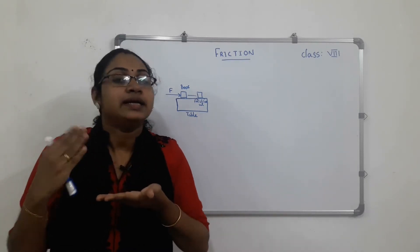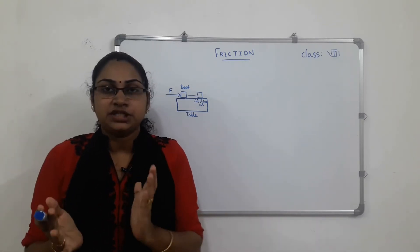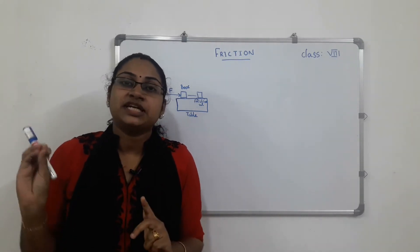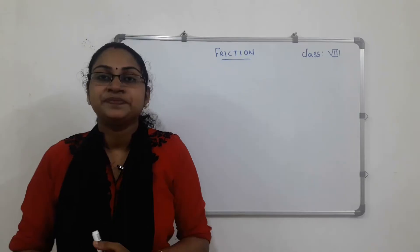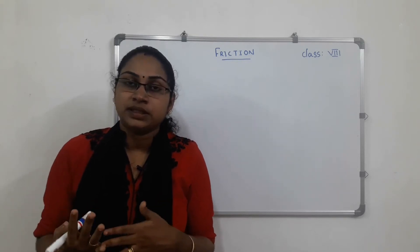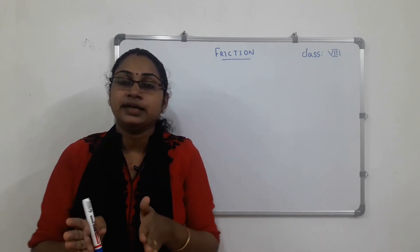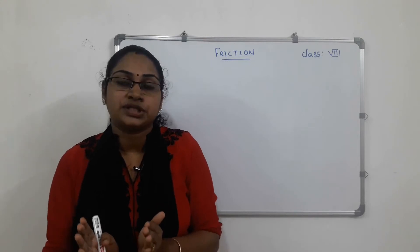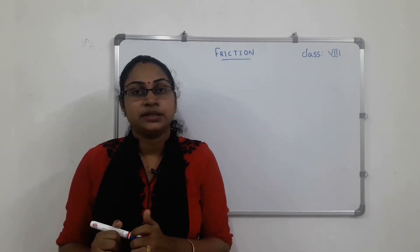This is applicable to any contact surface. The definition of friction: the force that comes into play when two surfaces come in contact with each other. It always acts opposite to the direction of motion of the objects. Because of the friction force, moving objects can be stopped.